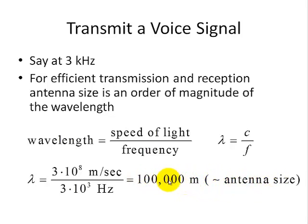If we want to reduce the antenna size significantly, we need to transmit at a higher frequency. Let's say we want to transmit at AM — about a thousand kilohertz or one megahertz, which is about the mid-range of AM radio stations. Therefore, this will decrease by a thousand times, which still gives us a pretty good size antenna of about 100 meters — I mean, 10 meters. And we can make that up with higher transmitter power and a more efficient amplifier at the receiver end.